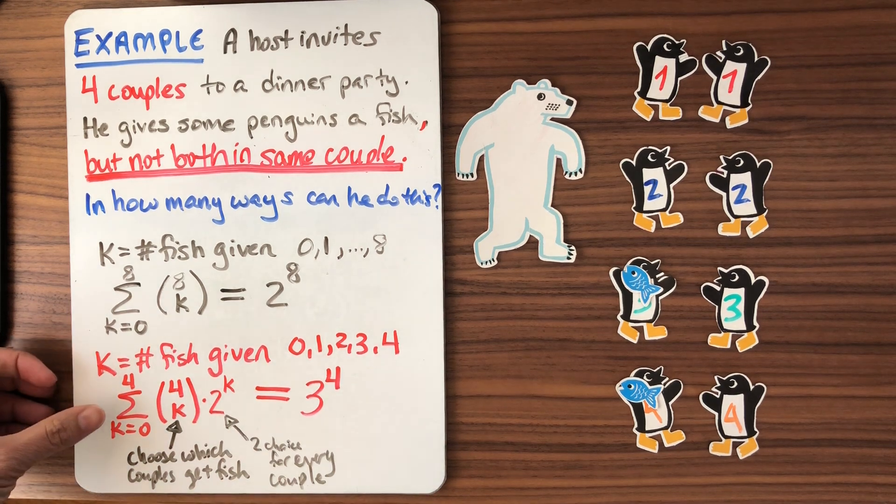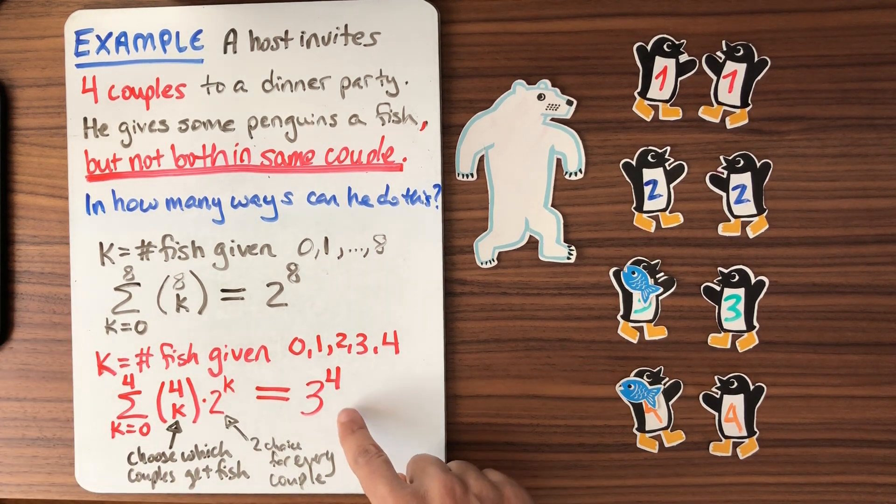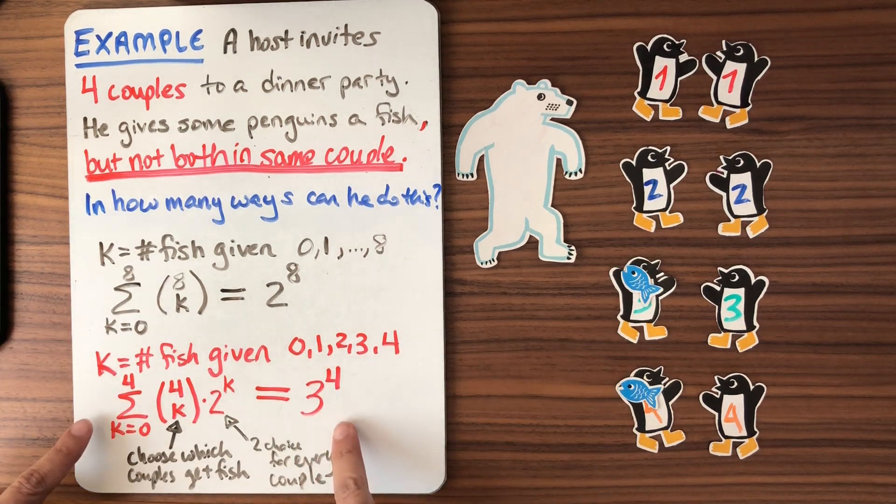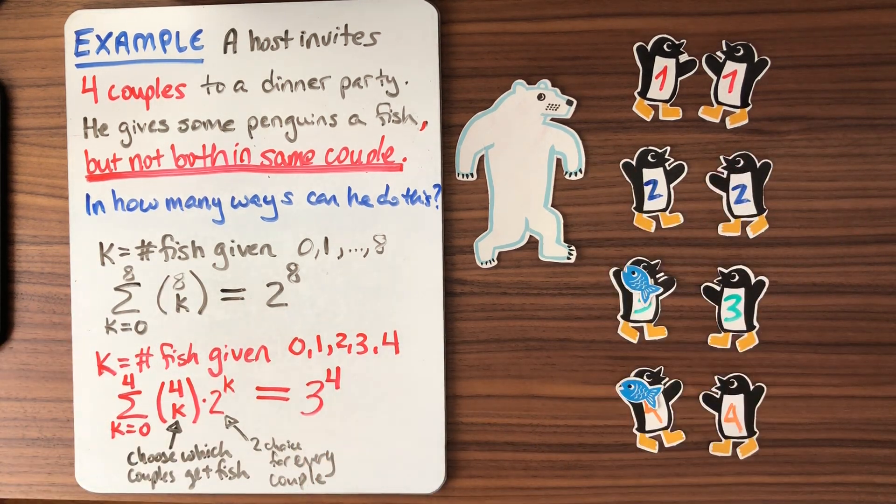We'll often find this that when we're summing binomial coefficients, we're often going to get powers. Powers of two are standard, but we can get other powers by thinking about things in interesting different ways. We'll see a lot more examples of this as we go into the next unit on the binomial theorem.